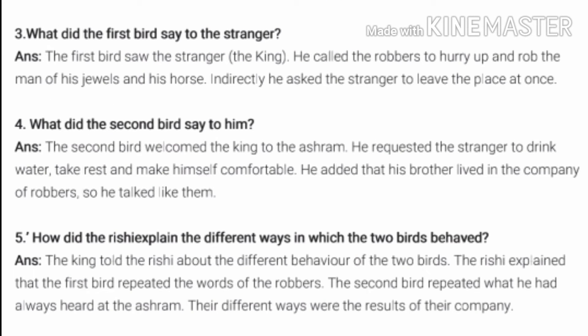Question No. 3: What did the first bird say to the stranger? The answer is: the first bird saw the stranger, meaning the king. He called the robbers to hurry up and rob the man of his jewels and his horse. Indirectly, he asked the stranger to leave the place at once.